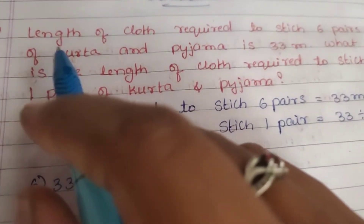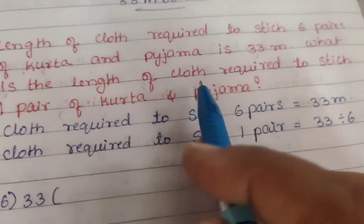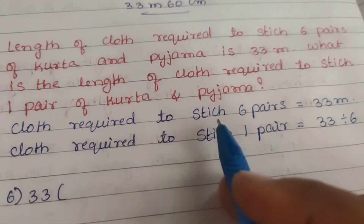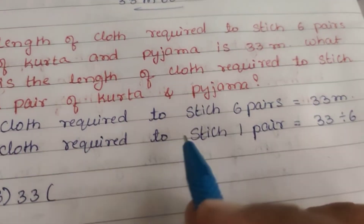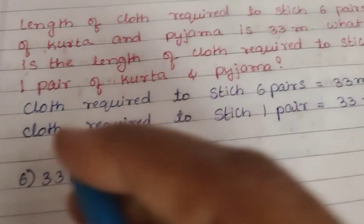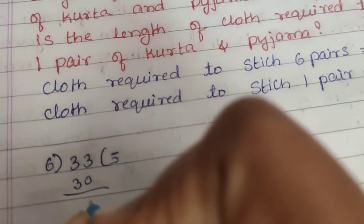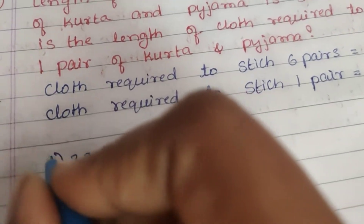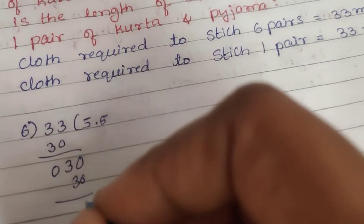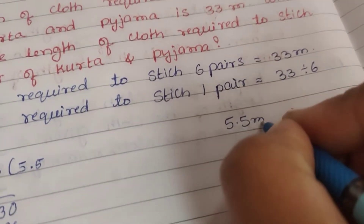Fifth question: Length of cloth required to stitch 6 pairs of kurta and pyjama is 33 metres. What is the length of cloth required to stitch 1 pair? Cloth required for 6 pairs is 33 metres. Cloth required for 1 pair is 33 divided by 6. 6 fives are 30; 33 minus 30 is 3; so the answer is 5.5 metres.